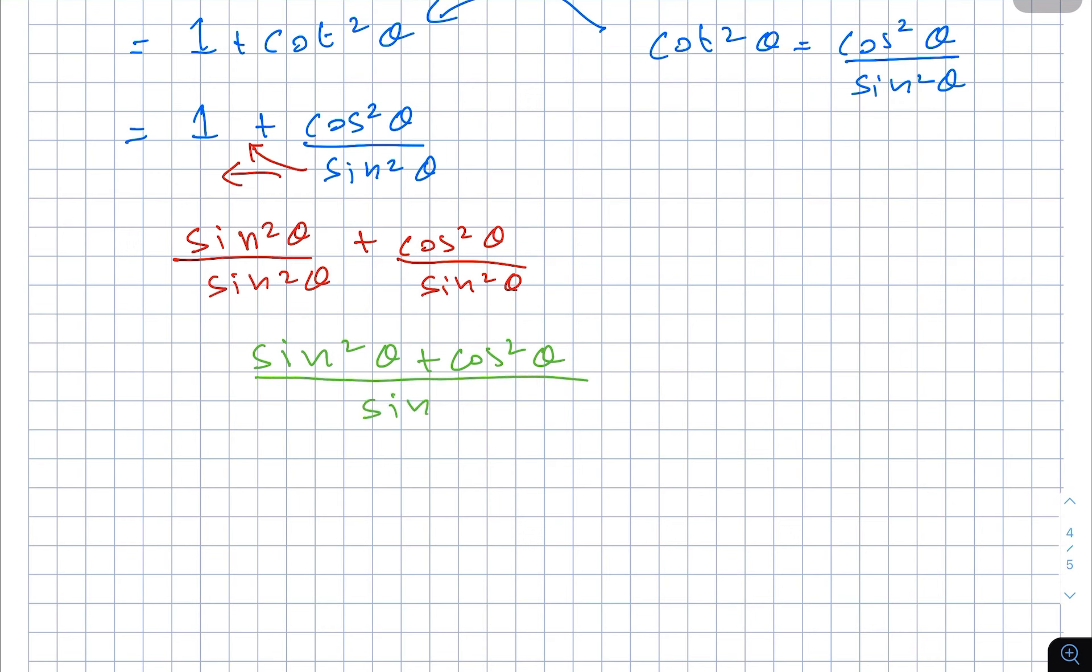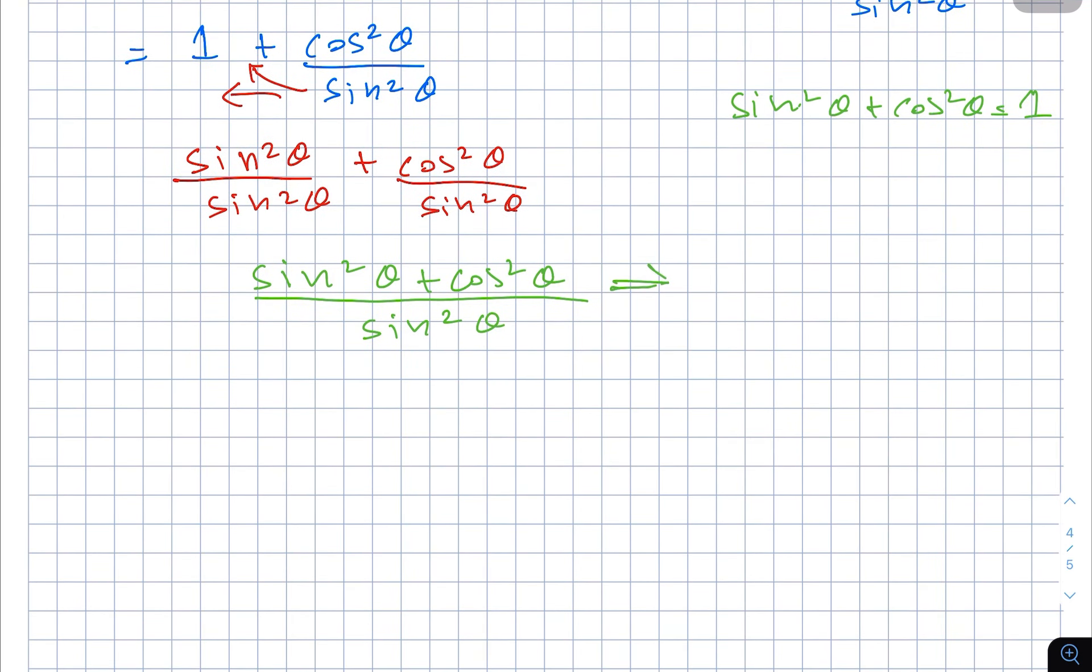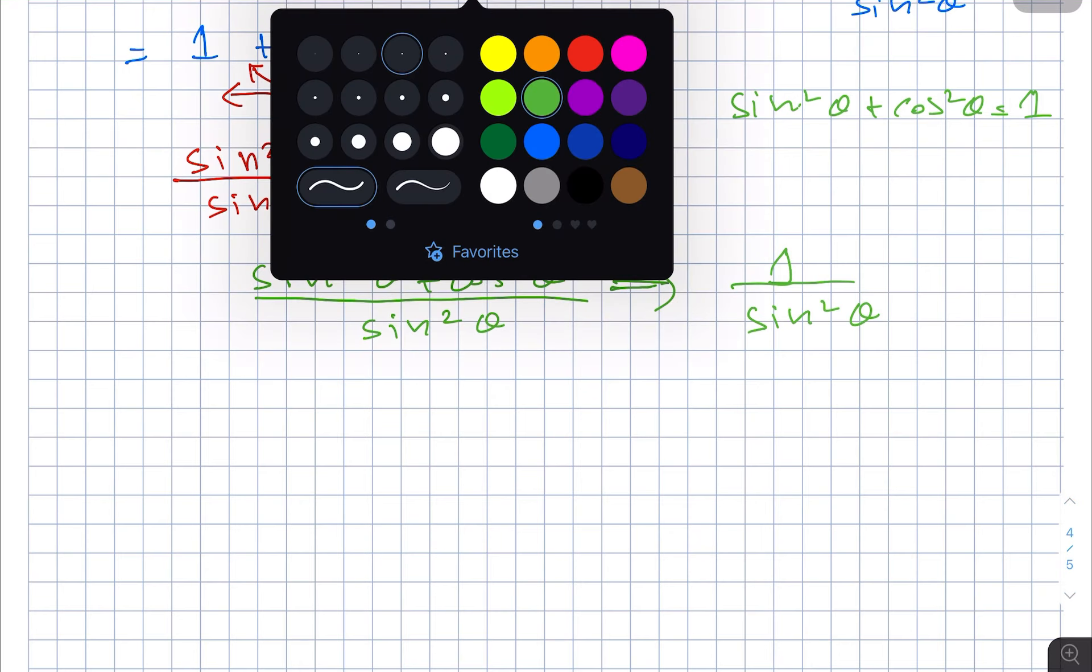over sin²θ. And from trig identities we know that sin²θ plus cos²θ equals 1. So therefore this becomes 1 over sin²θ. Now that we have that, remember